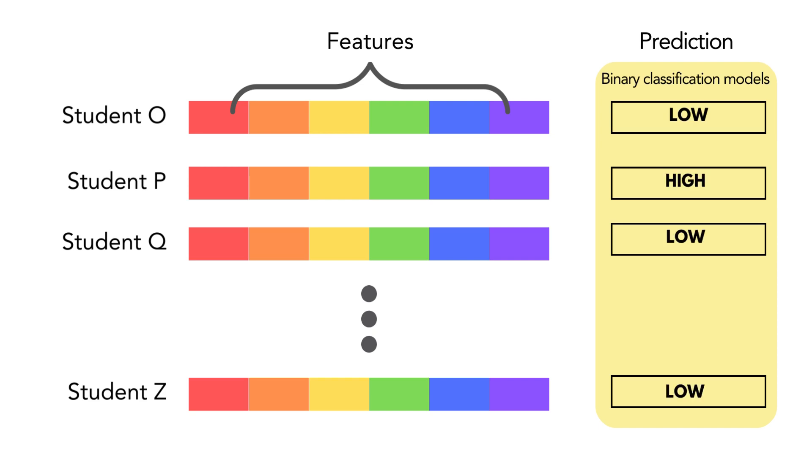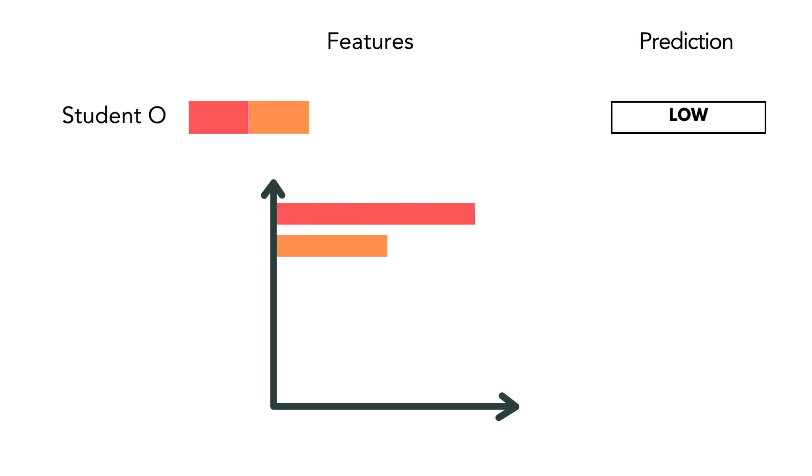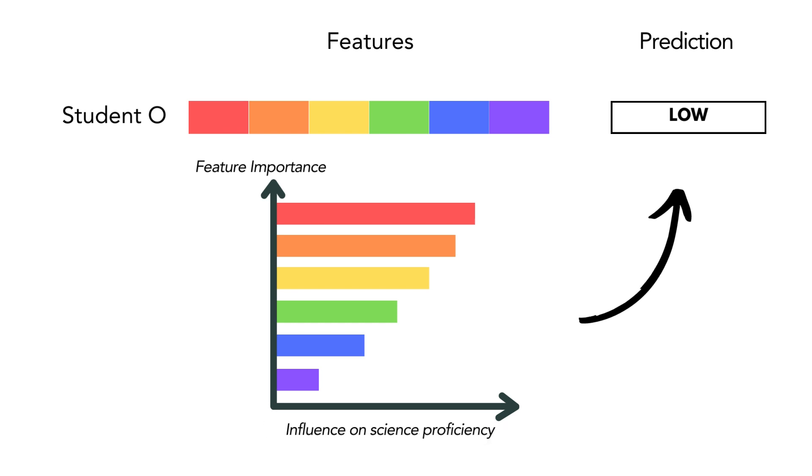We also used the machine learning interpretation tool Shapley Additive Explanations, or SHAP, that computed the contribution or importance of each feature to the model's prediction. The feature having the highest contribution entails that it had the highest influence on the science proficiency prediction.